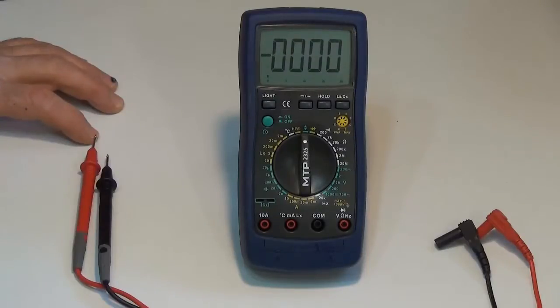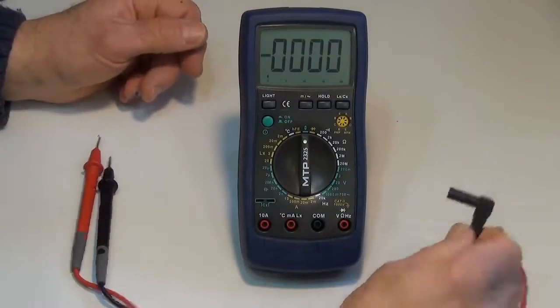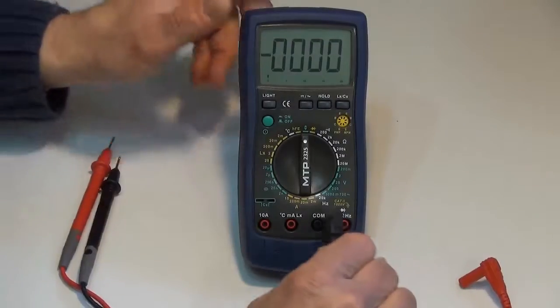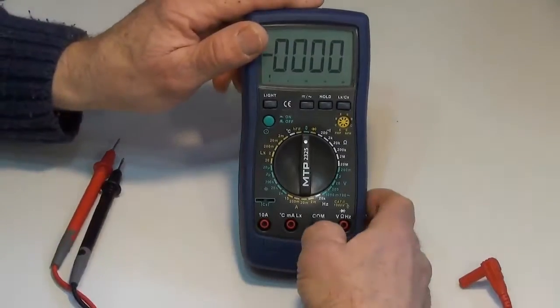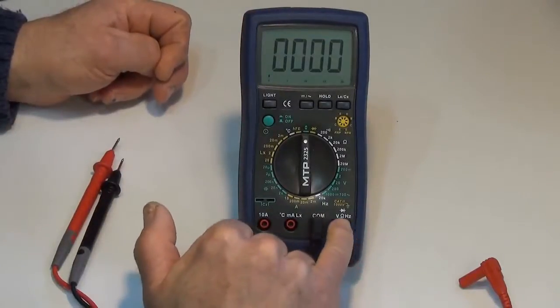Next, plug them into the digital multimeter. So what I want to do is I want to do a resistance check of the meter leads. So I'm going to plug in the black into the common jack, the COM connection.